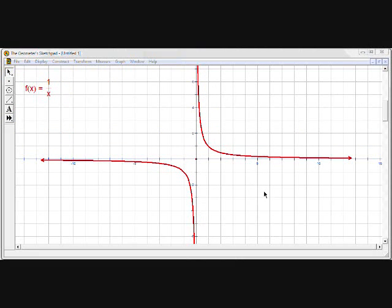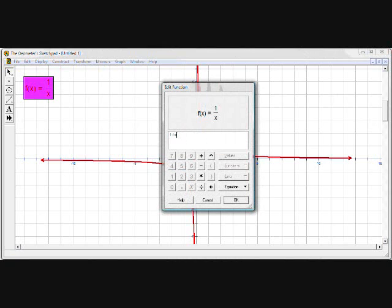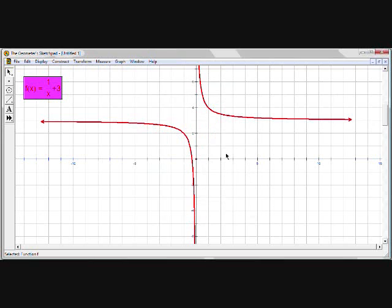There are different things that you can do to your rational functions to change the location of the asymptotes. So if I take my rational function, and I'm going to put parentheses around it, and I'm going to add 3 to the whole function. So I have my rational function plus 3. This transformation is going to shift the whole graph up 3 units. So I'm going to click OK, and look at what happened.